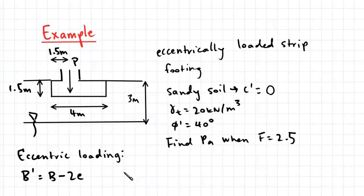So we can determine our eccentricity e by considering what half the width of the shallow footing is, so that's 2 minus the distance that the force is acting from the edge of the footing. So that's 1.5. So eccentricity is 0.5 meters.